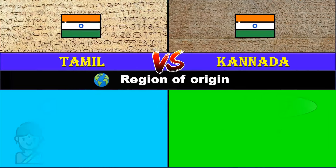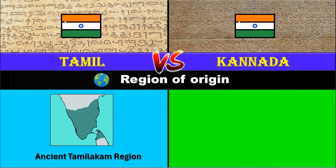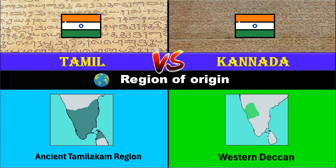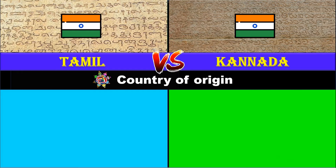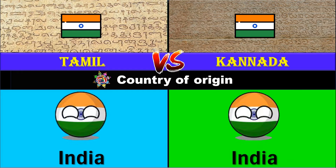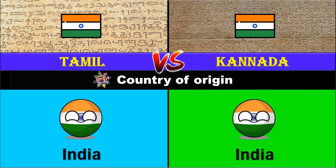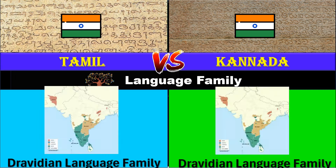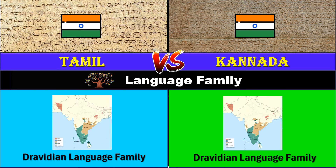Region of origin: Tamil originated in the ancient Tamil Aegam region, while Kannada originated in the Western Deccan region. Both languages originated in India. Both languages belong to the Dravidian language family.